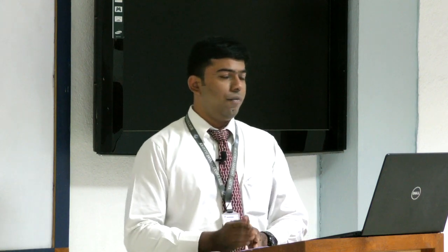The final principle is the principle of circumstantial fact, which states that facts do not lie, but men can and will. In law there are two types of evidence: direct evidence and indirect evidence. Direct evidence is basically eyewitness or oral testimony given by witnesses or victims in court, and we all know that these testimonies can be fabricated and influenced. We do not want these kinds of evidences alone to prove innocence or guilt because oral statements may not be true.